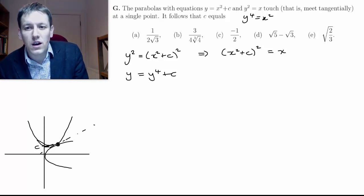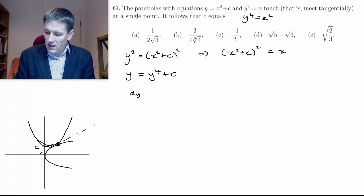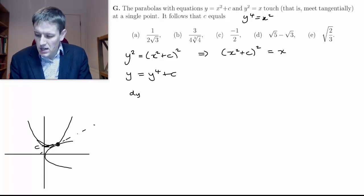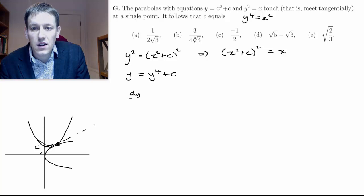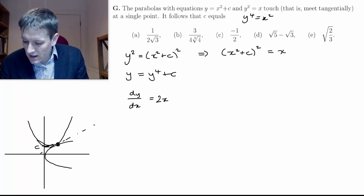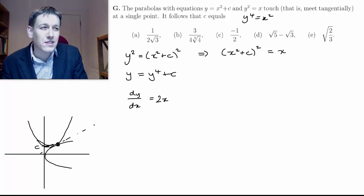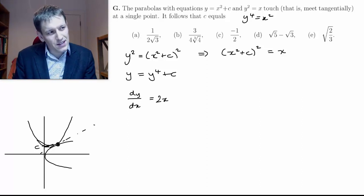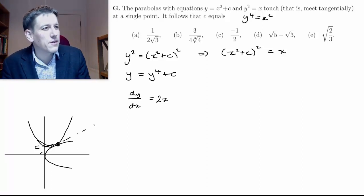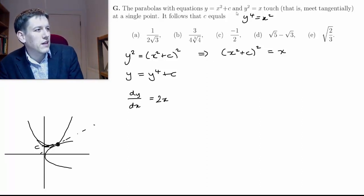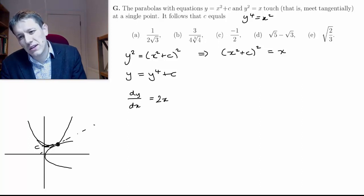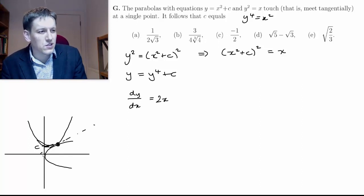So if I work out the first one here, dy/dx, the gradient of the first curve here is equal to 2x. For the second one, y² = x—I don't think you're required to know about any implicit differentiation formally here, but actually in fact if you think about this curve, we can just deal with the positive part of it here.